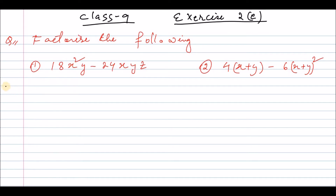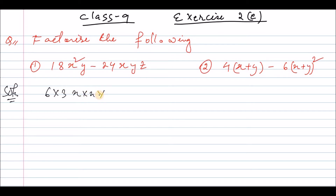Question number 1, solution. We have 18x² y minus 24xy. We find the common factor — the common factor is 6xy. We factor that out: x squared equals x into x, and we have y.